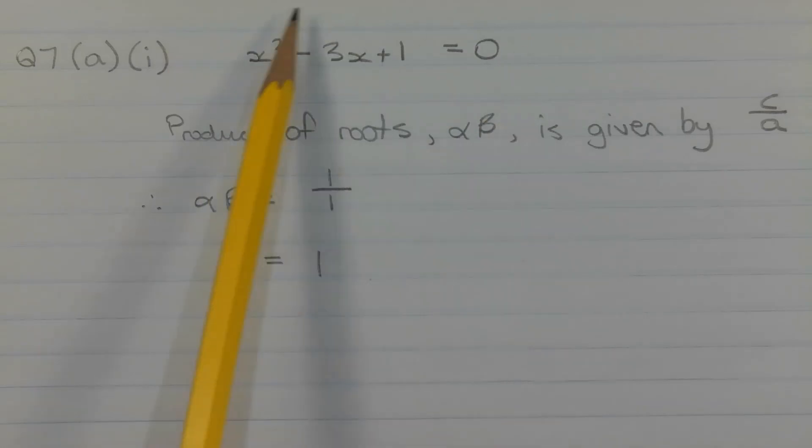Since we have a quadratic polynomial equation, that is, a polynomial expression whose degree or highest power is 2, the product of the roots alpha beta is given by c over a, where c is the constant term 1 and a is the coefficient of x squared, which also is 1.